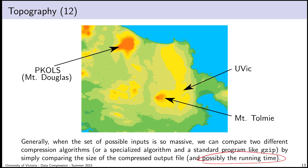I might also want to consider how long compression takes, though the results we get in this lecture take about the same amount of time as the big three compression tools — so we won't worry about a runtime comparison. Since there is so much possible input data, I argue we can compare compression scheme performance just by looking at the size of the output file. If there was only a small amount of possible input data, I'd want to include the size of the decompressor in my measurement, but in this case the data could be gigabytes or terabytes.